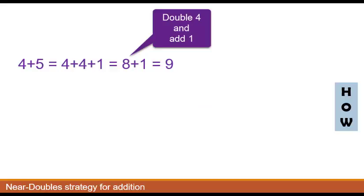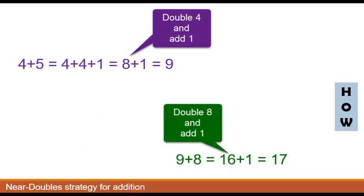Four plus five, we're going to double four and add one. Eight plus one is nine. Nine plus eight, we're going to double eight and add one to get an answer of 17.